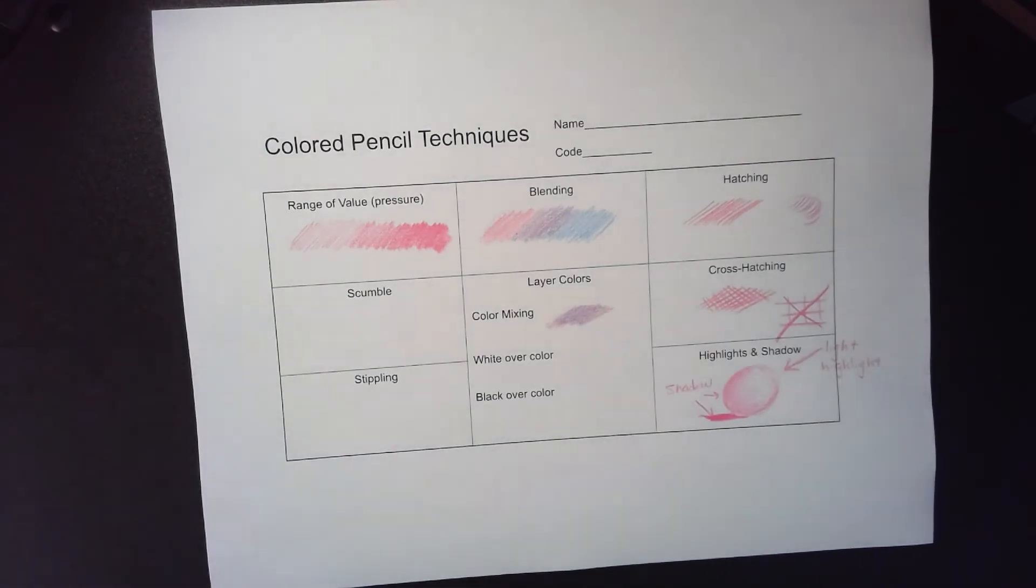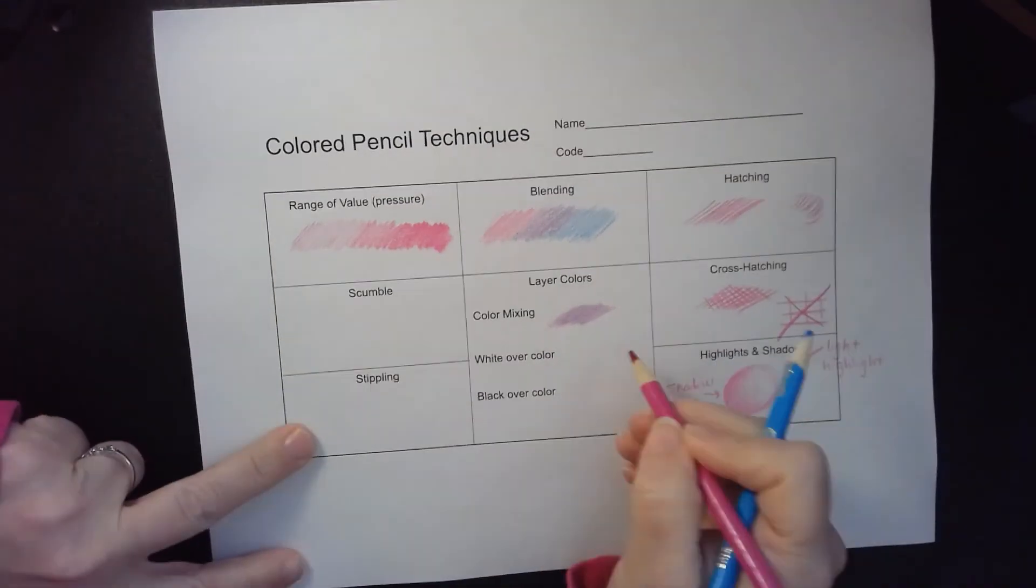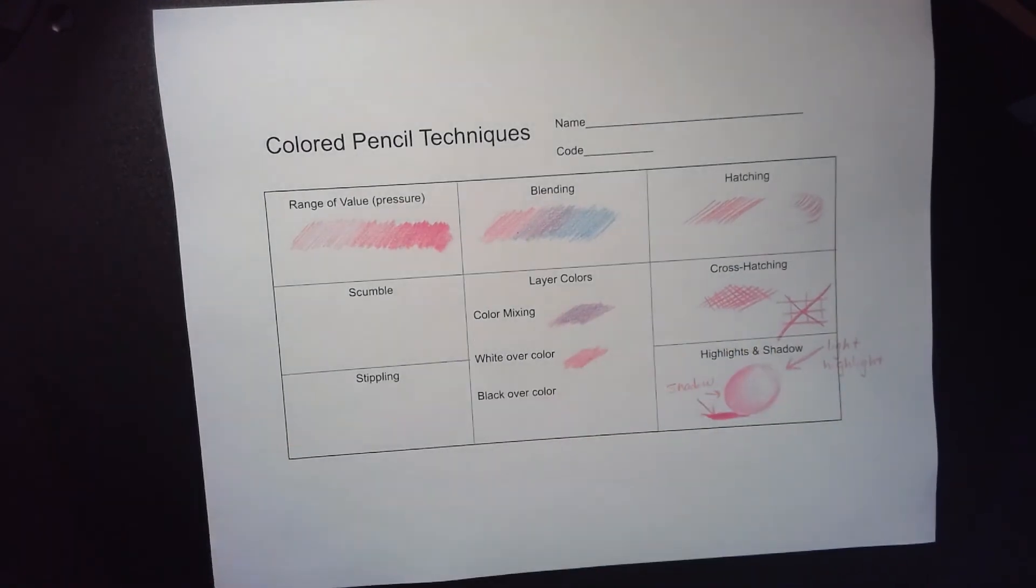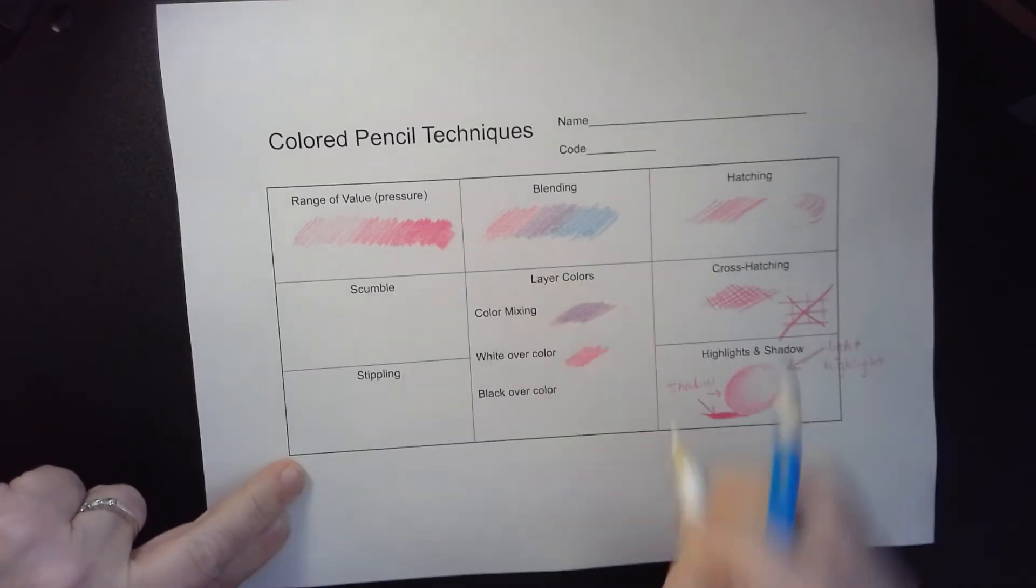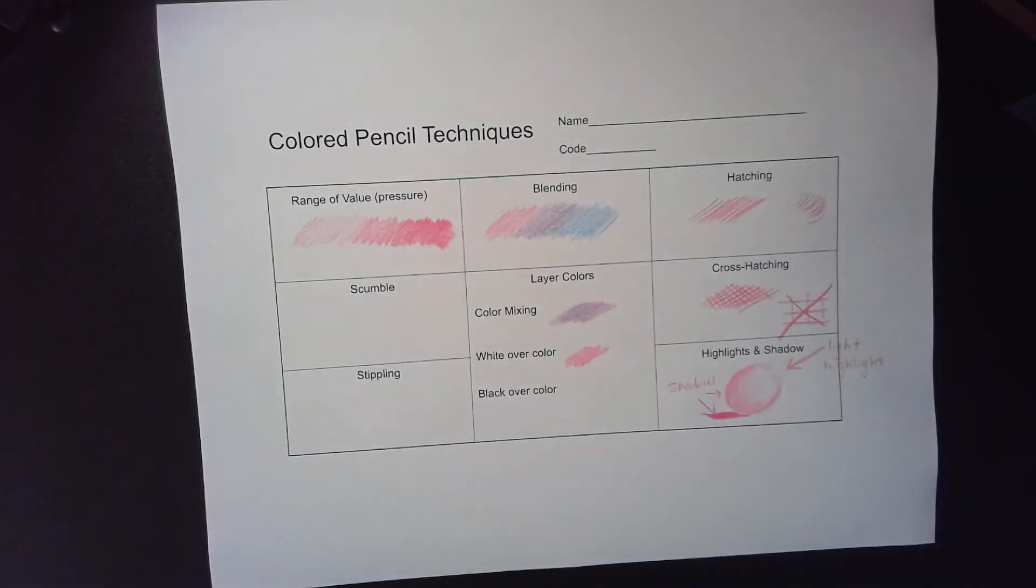Let me grab my white pencil here. This one is just white over a color. So again, I come in with my color and I'm going to put my white over top. It will blend them together a little bit and sort of start to do a little color mixing for you also.